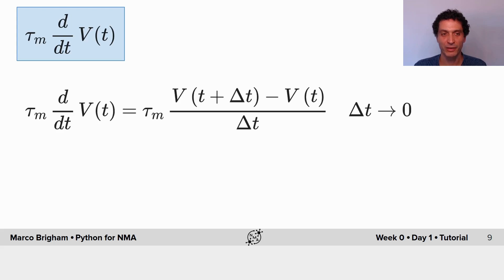Now recall that the membrane equation from our LIF neuron specifies how the membrane potential evolves in time, and we want to discretize this evolution in time. We start by writing the definition of the derivative.